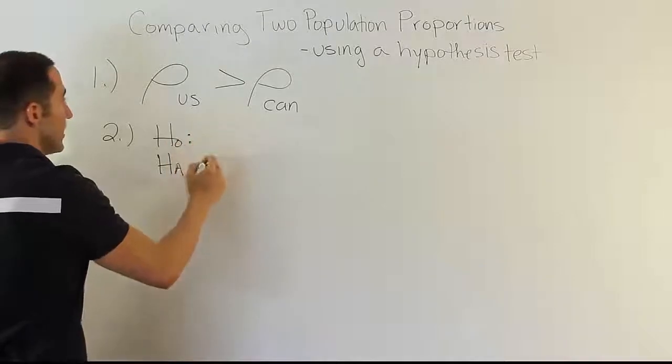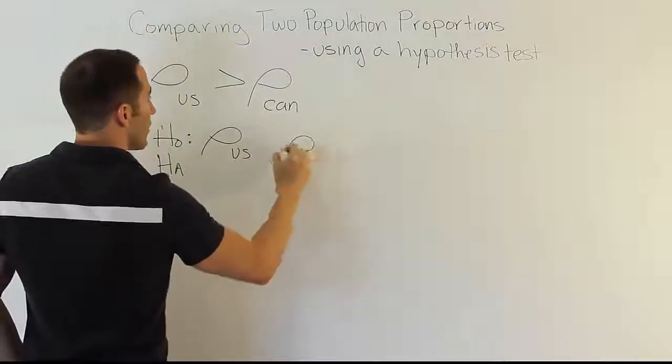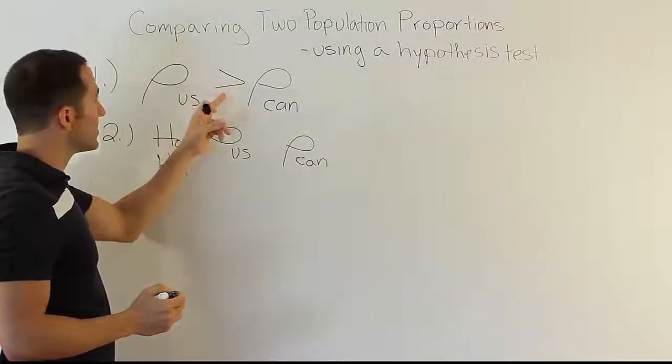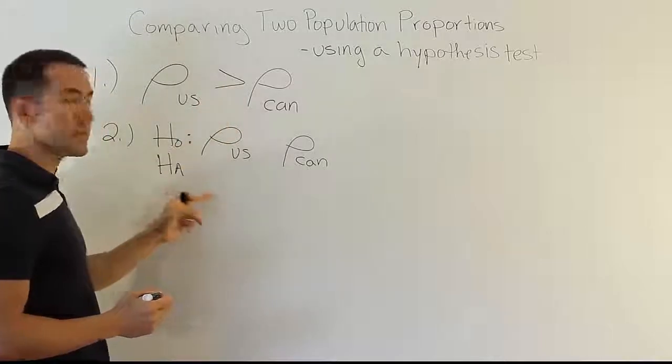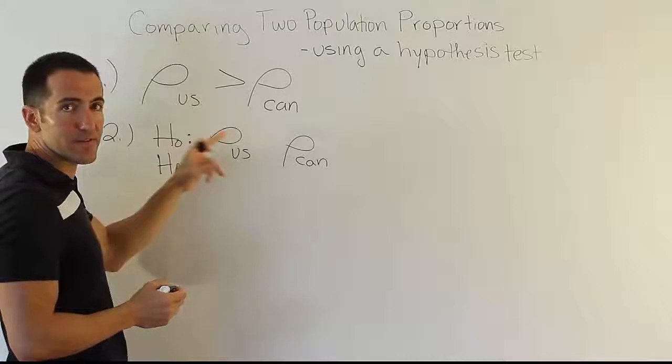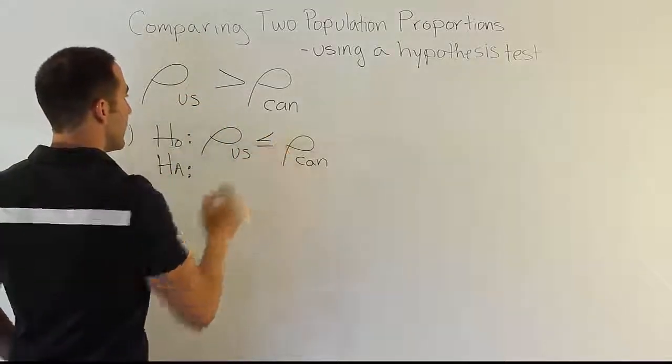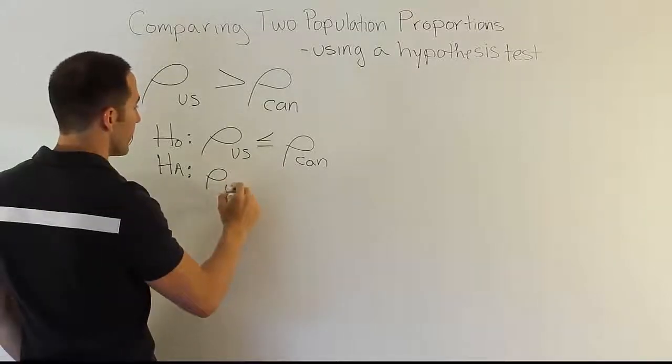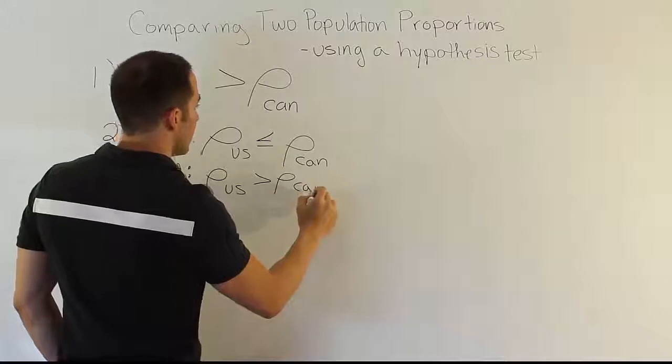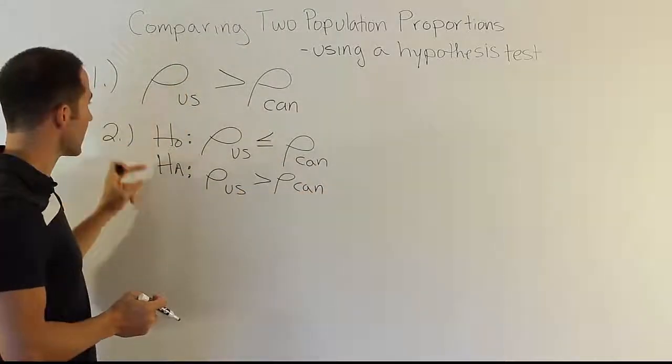Alright, H0 is going to be rho for US, rho for Canada. But we have to change the symbol because we know that this symbol greater than is the symbol we use in the alternative hypothesis. So we're going to have to do the opposite of that for the null. If you're not greater than, it would be that it's less than or equal to, right? And then that would be rho for US is greater than rho for Canada for the alternative hypothesis. Okay, so in this case the alternative and the claim are the same.